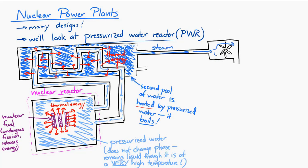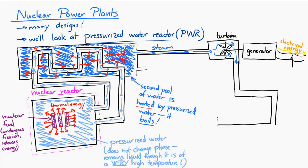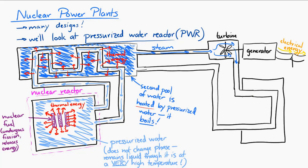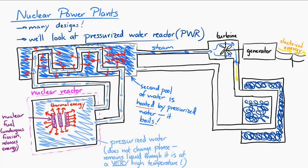The turbine is connected to a generator, which produces electrical energy, which then leaves the power plant. And then the steam, which has lost some of its thermal energy as it passed through the turbine, then comes back around. It's cooled down by a third body of water, a cool water pool. And after it's cooled down and condensed back into water, it goes back to the original tank, where it can be heated again by the pressurized water that came from the nuclear reactor.